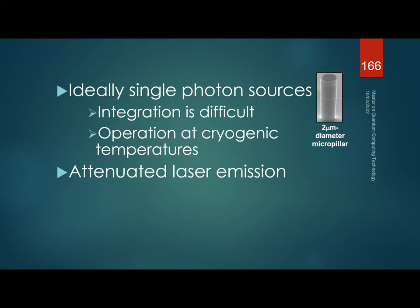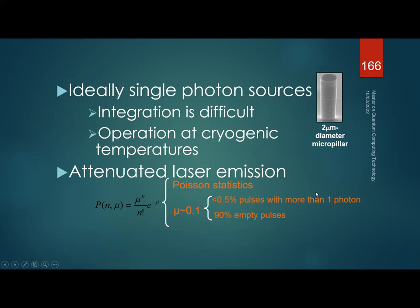In the meantime, the scientific community has used attenuated lasers. If you attenuate a laser to a mean photon number of 0.1 photons per pulse, you get less than 0.5% of pulses with more than one photon. This is important because Eve cannot clone a photon, but if you send two photons in the same pulse she can take one and measure it — so you must ensure no more than one photon per pulse. The price is that 90% of pulses are empty, but attenuated lasers are very simple to implement.